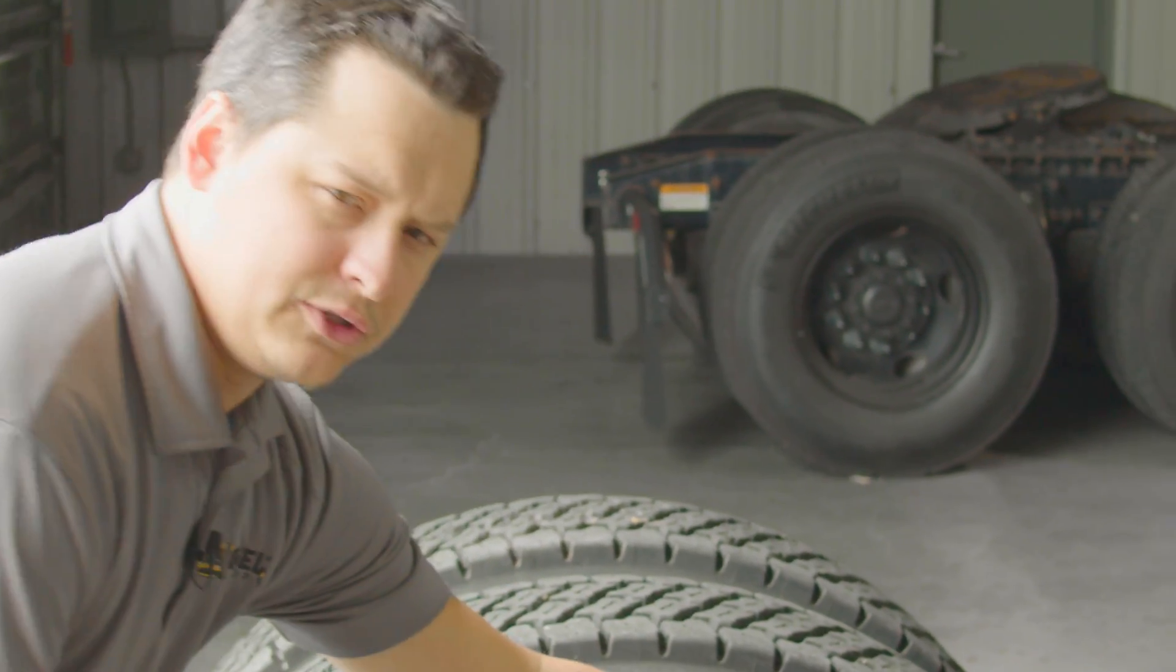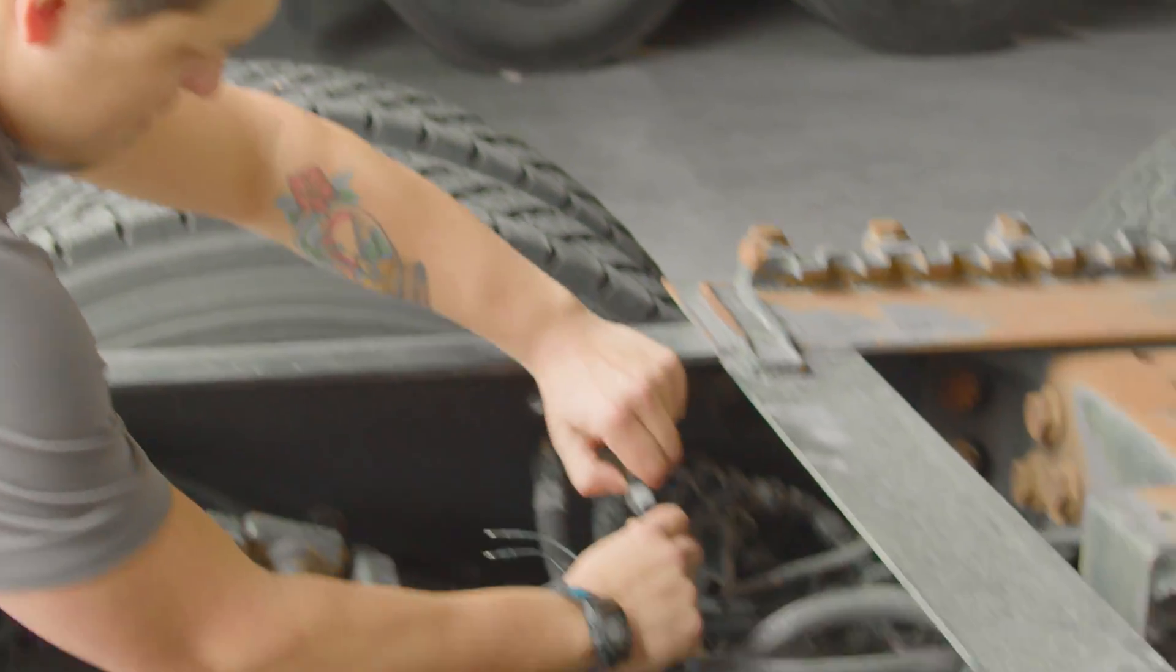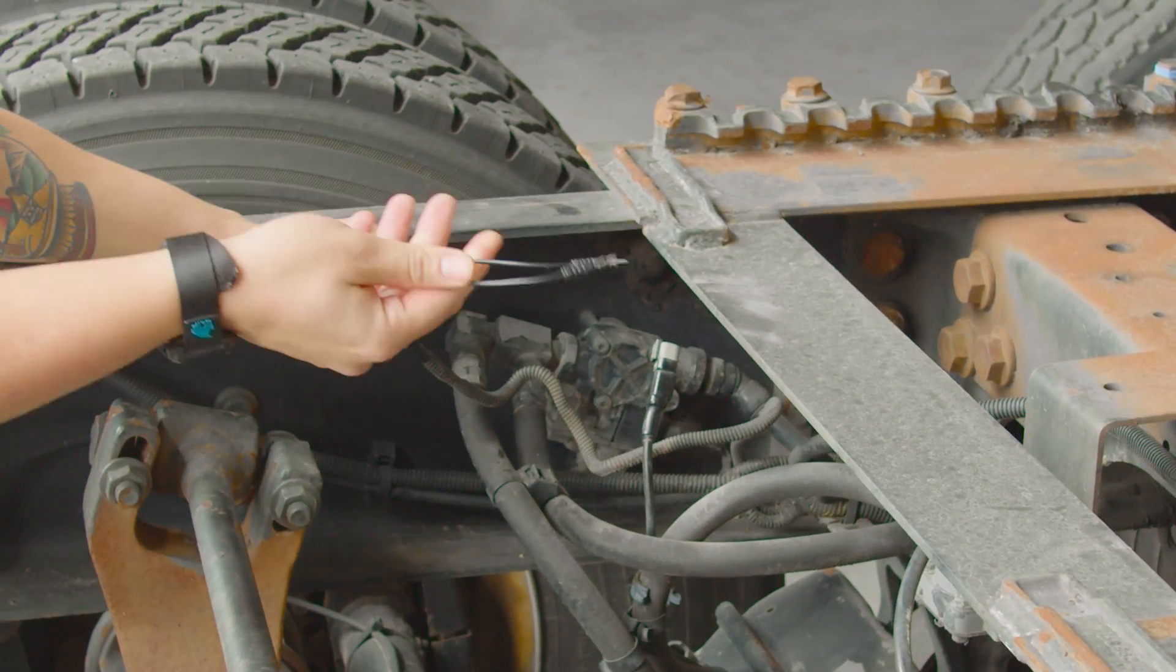Alright, so we have our wheel speed sensor here, 2-pin Deutsch connector. Go ahead and unplug it and install our jumper.